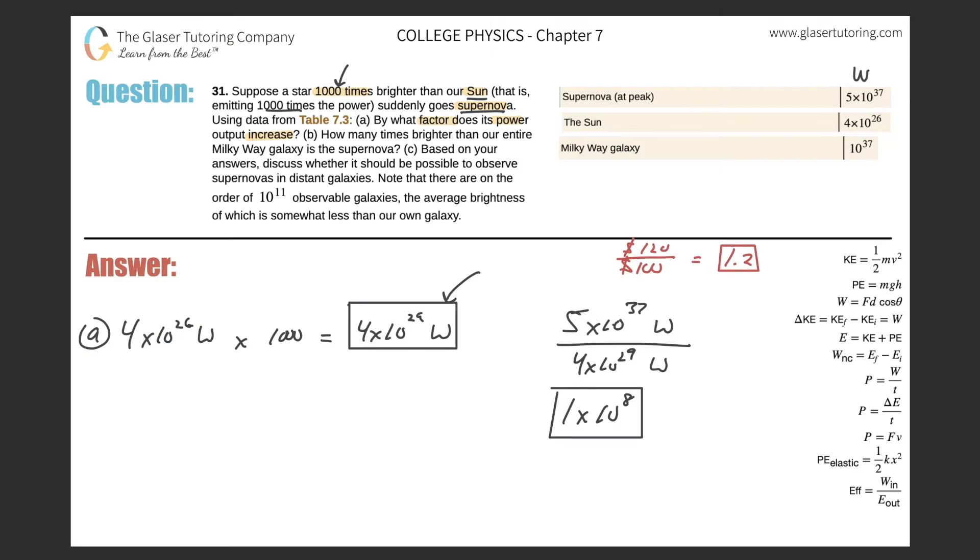So that takes care of letter A. Let's take a look now at letter B. It says, how many times brighter than our entire Milky Way galaxy is the supernova? So basically now we're just trying to compare the brightness of this supernova to the brightness of the Milky Way galaxy.